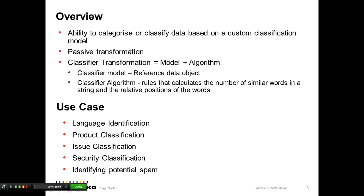At a high level, classification means diversifying something based on some benchmark, and here we use the classifier transformation model to classify the input data. The classifier transformation is a passive transformation, meaning the number of input rows passed through the transformation need not be the same as the number of rows returned. The classifier transformation is a combination of a classifier model and an algorithm, and below are a few use cases where it can be used.